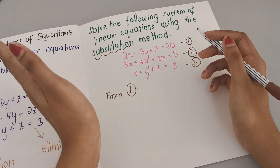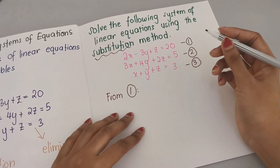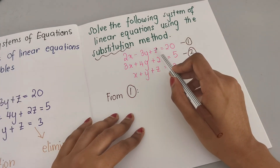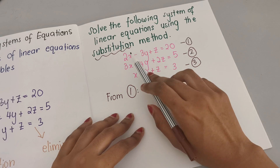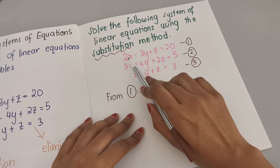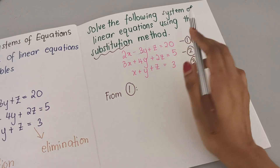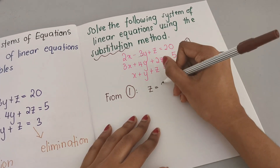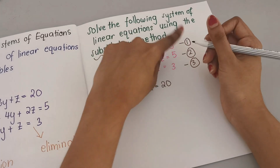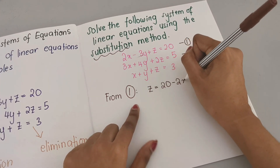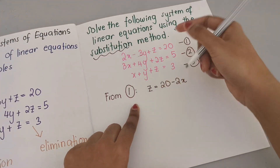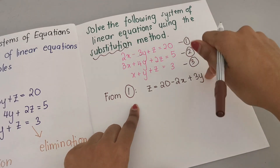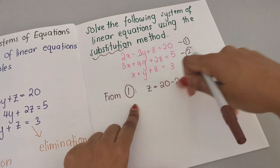From equation 1, choose which variable to isolate on the left-hand side and bring the rest to the right side. I want to substitute z, so I'll leave z on the left side. That gives us z equals 20 minus 2x plus 3y.